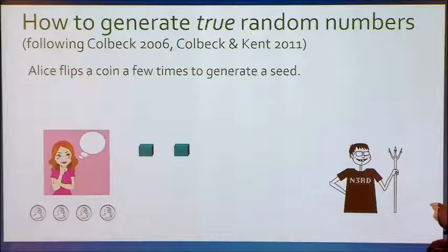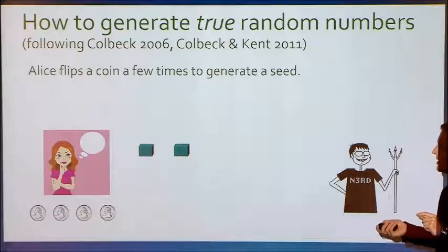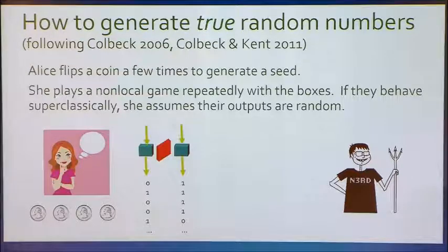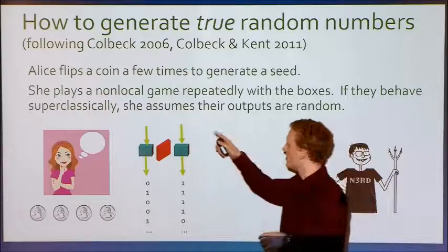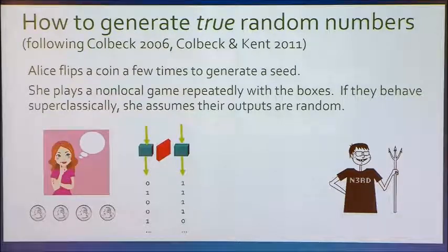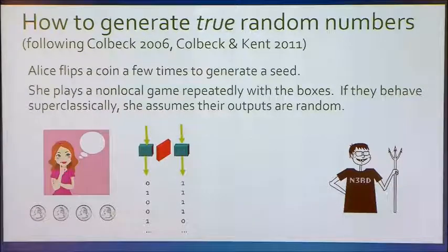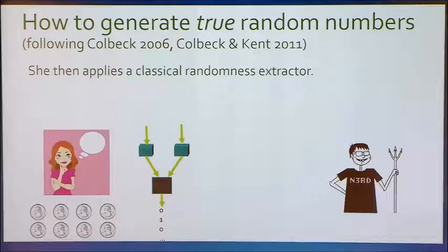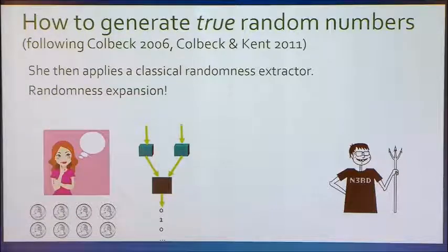The basic protocol is this: Alice generates a small amount of initial randomness — we assume she has the ability to do that — and then uses that initial randomness to play non-local games with this multi-part device. During the non-local games, she shields one device from the other so they can't communicate. If the boxes exhibit an average score at the non-local game that is impossible for a classical device and gets into the quantum realm, she concludes the devices must be exhibiting quantum behavior, so the outputs are at least partially random. She applies a classical randomness extractor using some additional self-generated randomness, and then presumes that what comes out is a collection of nearly uniformly random bits. The effect is randomness expansion: a small collection of randomness transformed into a larger collection.